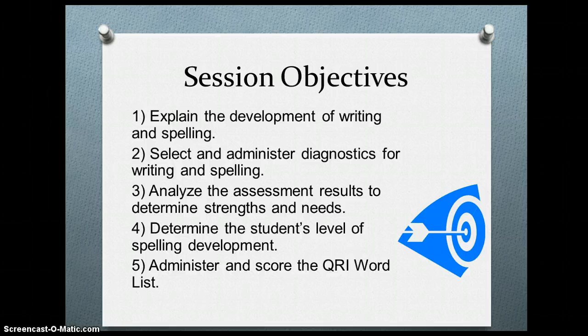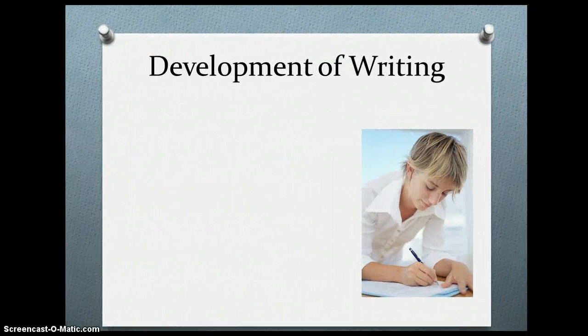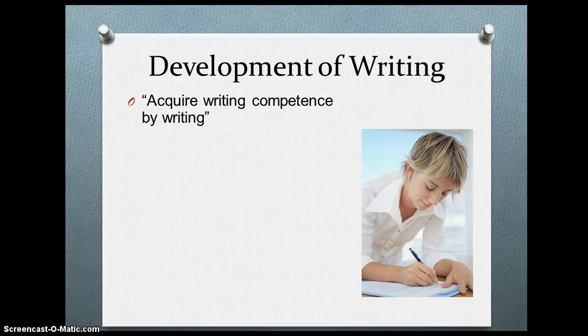Let's talk about the development of writing. I encourage you to go back and take a look at chapter seven on the foundations of literacy. Page 271 is where they do an overview of the development of written language, and they remind us that children acquire writing competence by actually writing. In a similar fashion, they acquire competence in speech by talking, and they acquire competence in reading by actually reading. So the more the child is exposed to reading, writing, and language, the more they are able to develop competency in each of those areas.